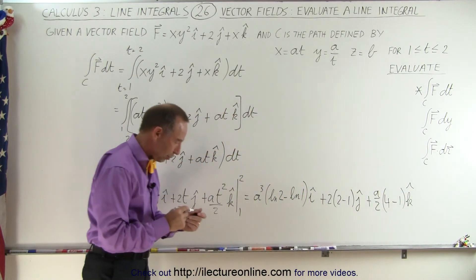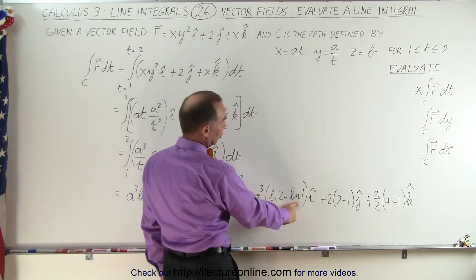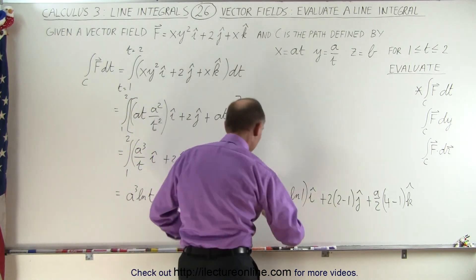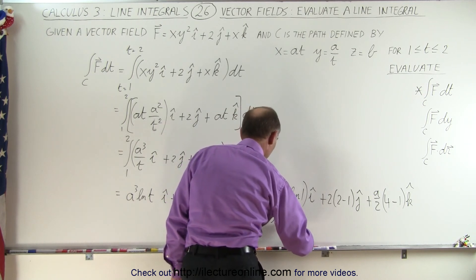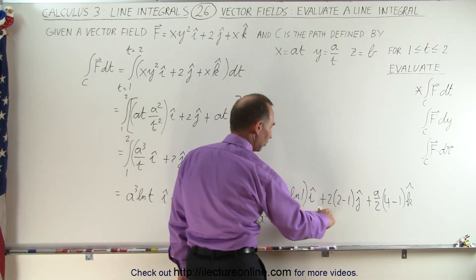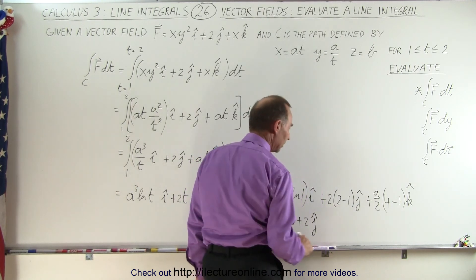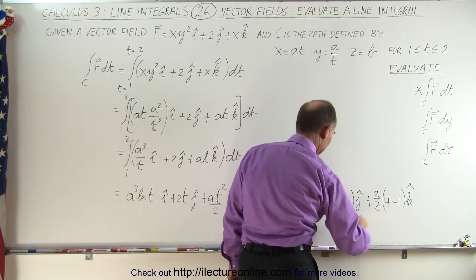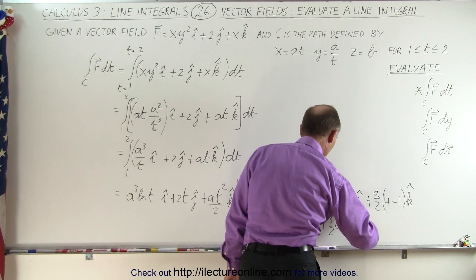And then we simply have to simplify this. The natural log of 1 is 0, so this becomes a³ times the natural log of 2 in the i direction. This would be 2 minus 1 is 1 times 2. That gives me plus 2 in the j direction.